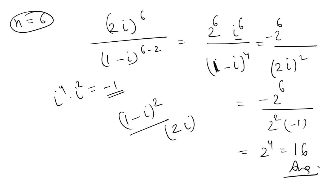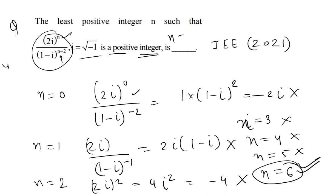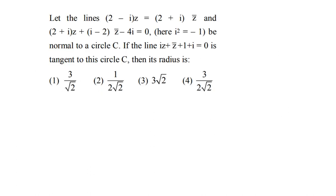So n = 6 is the correct answer for the given question. Now, for the next question: you can substitute values into the expression z + i minus 2z̄ minus 4i = 0. These two lines are equal to being normals to a circle.